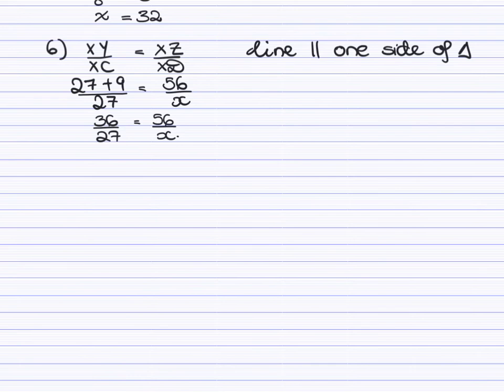Now, you want to make your life easier and you want to isolate X. You are going to flip this ratio over. What you do to the left-hand side, you have to do exactly the same thing to the right-hand side. So, flipping them over, you end up with 27 divided by 36 is equal to X over 56. This is the same ratio. Now, in the last step, you multiply both sides by 56 and your answer would be equal to 42 centimeters.